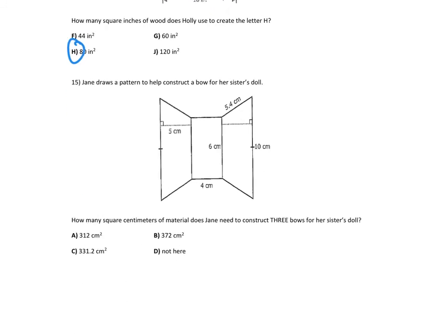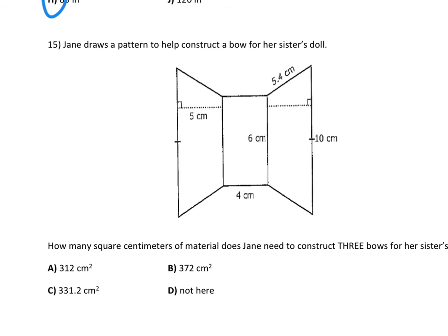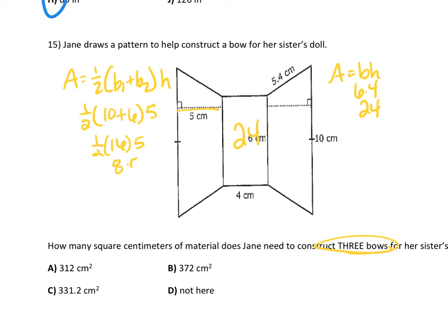And then our last one, number 15. She draws the pattern to help construct a bow, but it's asking about three bows. So whatever we find for the area, we got to multiply it times three. This is a trapezoid here. That's a trapezoid. This is a rectangle in the middle. We have two trapezoids. So our rectangle is 24 here. Our trapezoid here is one half. Base 1 is 10. Base 2 is 6. The height is 5. So one half of 16 times 5. That's 8 times 5 is 40. So this is 40 and 40. So 40 plus 40 is 80 plus 24 is 104. But we have three of them. So that's where our number gets in. And we have 312. So that's our last question. So make sure you have everything written down and turn it into me.